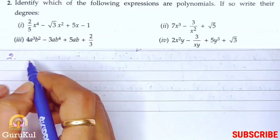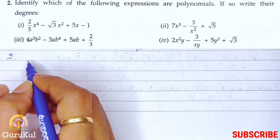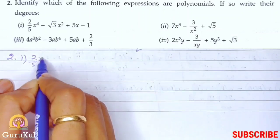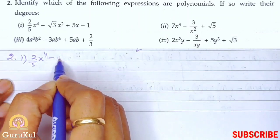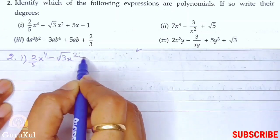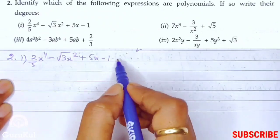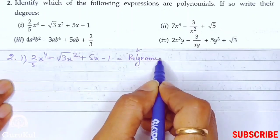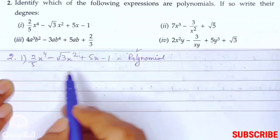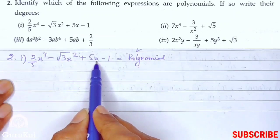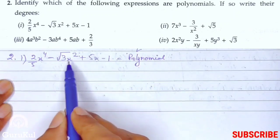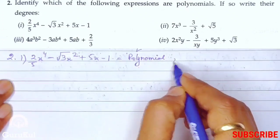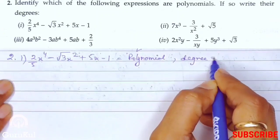Question number 2. We need to identify which of the following expressions are polynomials. If so, we need to write their degree. So, the first one. Two by five x to the power four minus square root of three x square plus five x minus one. So first of all, yes, it is a polynomial. Now, its degree has been asked. So see, all have x. This x has power one. This is x to the power two. And this is x to the power four. So, the highest number is four. So what happened here? Degree is four.